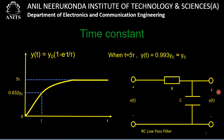At t = 5τ, the output is 1 − e^(−5) ≈ 0.993 × Y₀, which is almost equal to Y₀. So at t = 5τ, the output is almost the same as the final value reached at t = infinity. The capacitor requires a minimum of 5τ seconds to reach its maximum value.